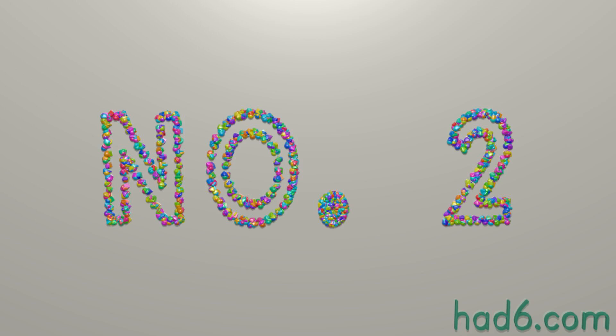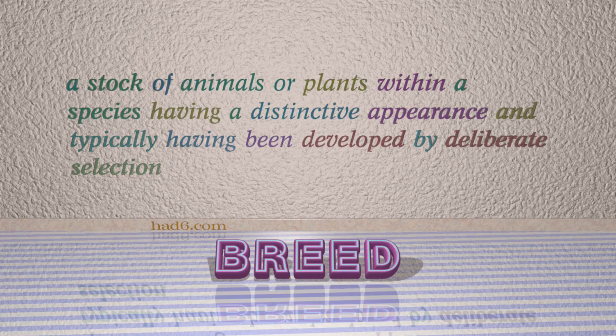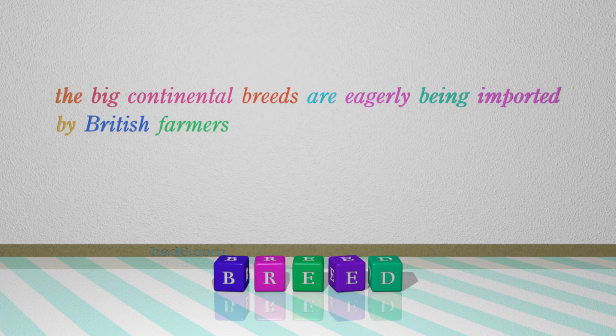Number 2: Breed. Which means a stock of animals or plants within a species having a distinctive appearance and typically having been developed by deliberate selection. For example: The big continental breeds are eagerly being imported by British farmers.